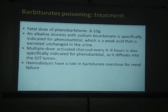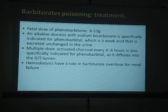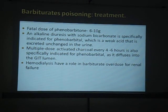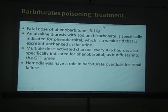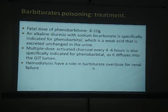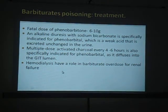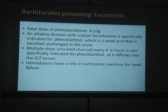Barbiturate poisoning - we do not have a specific antidote. So we can go for symptomatic treatment. Since it is an acidic poison, we can go for forced alkaline diuresis. The fatal dose is 6 to 10 grams. We can do stomach wash with activated charcoal to prevent further absorption. If the patient has severe symptoms like CNS depression, we can go for hemodialysis.